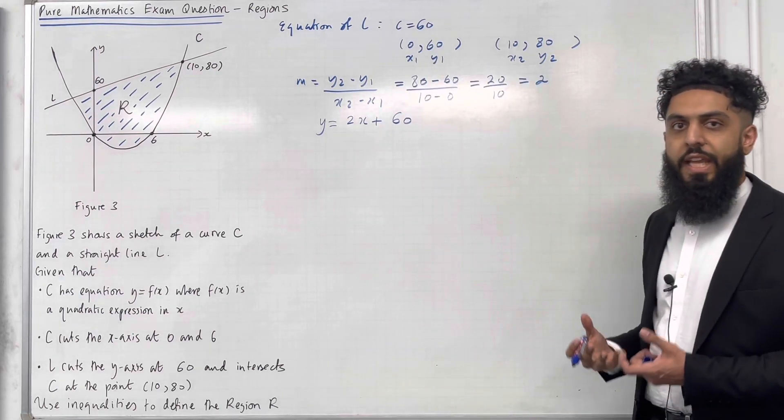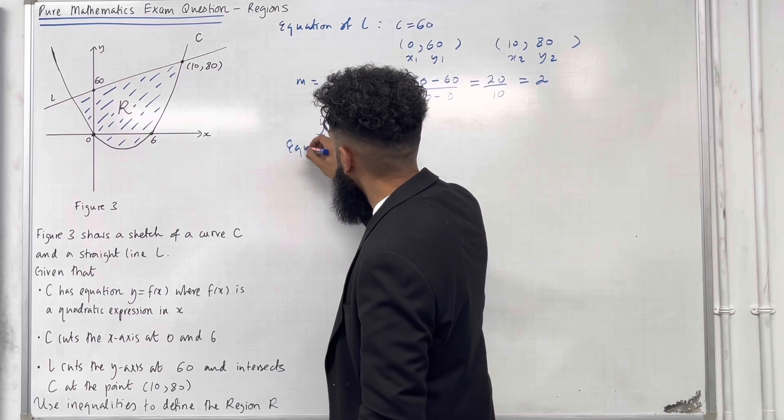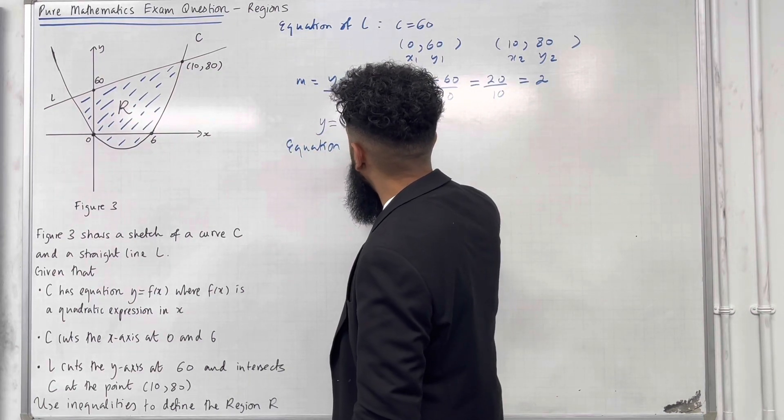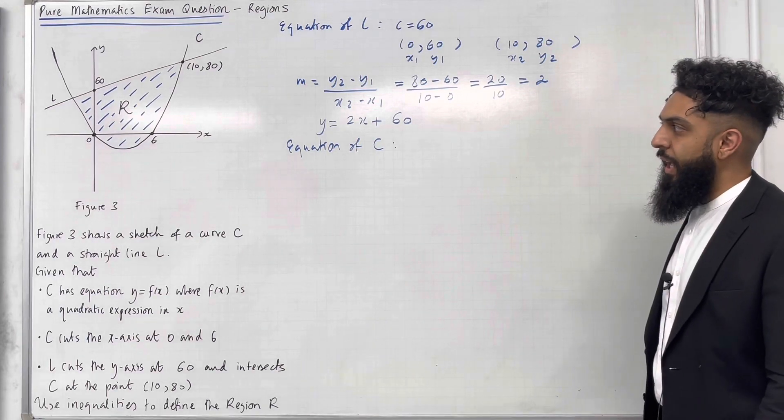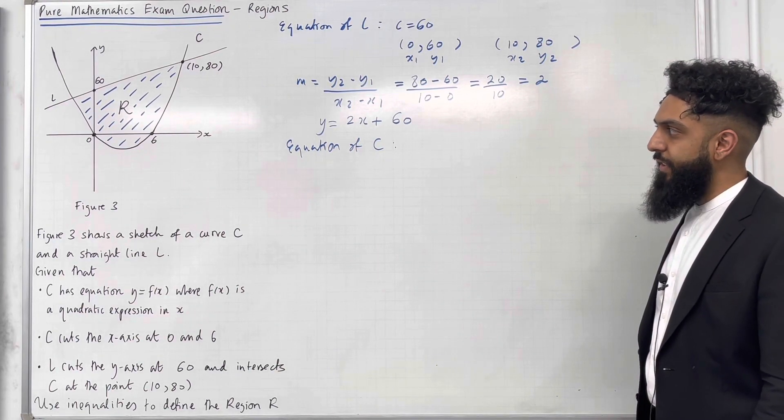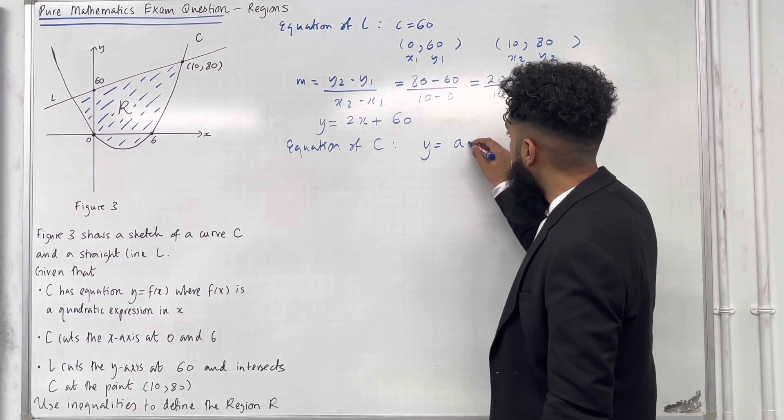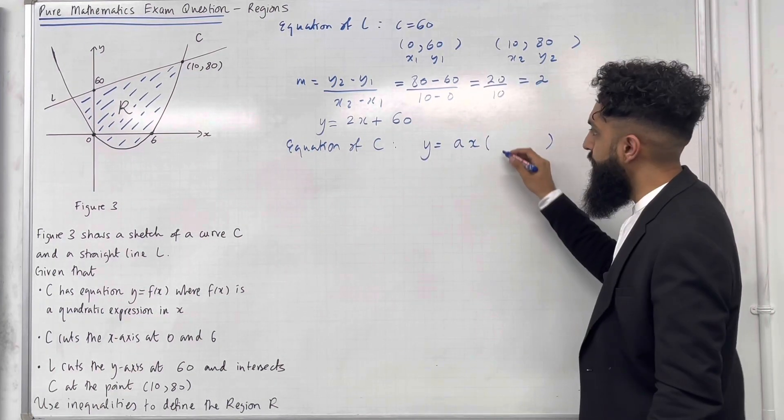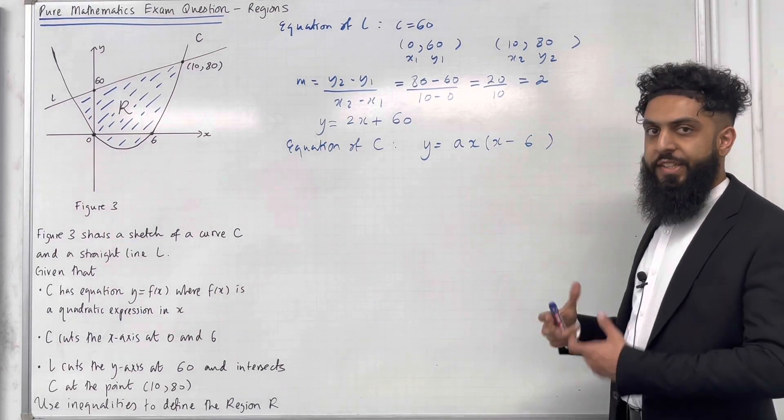Now I'm going to find the equation of the curve C. We have a positive quadratic and we know that the X intercepts are 0 and 6. So the equation will be of the form Y equal AX in bracket X minus 6. Now A is my scale factor.